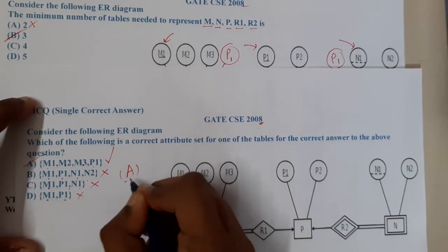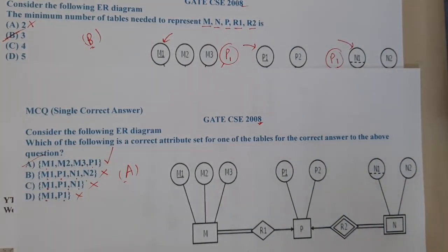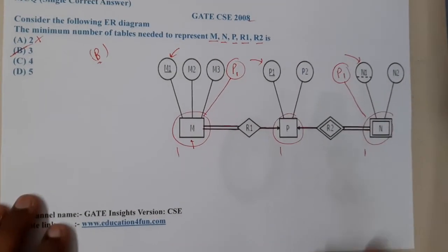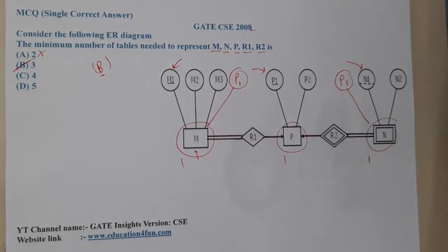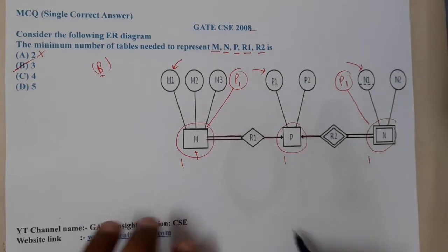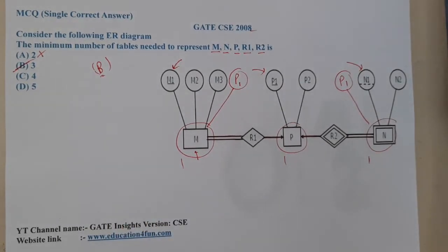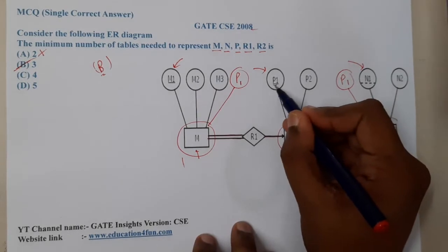So this question is going to be really easy. It's a paid question but it's an easy question. Now I hope everyone got a clear idea with respect to this question. This question, if you are clear with how we are finding the number of tables, you can easily solve it.